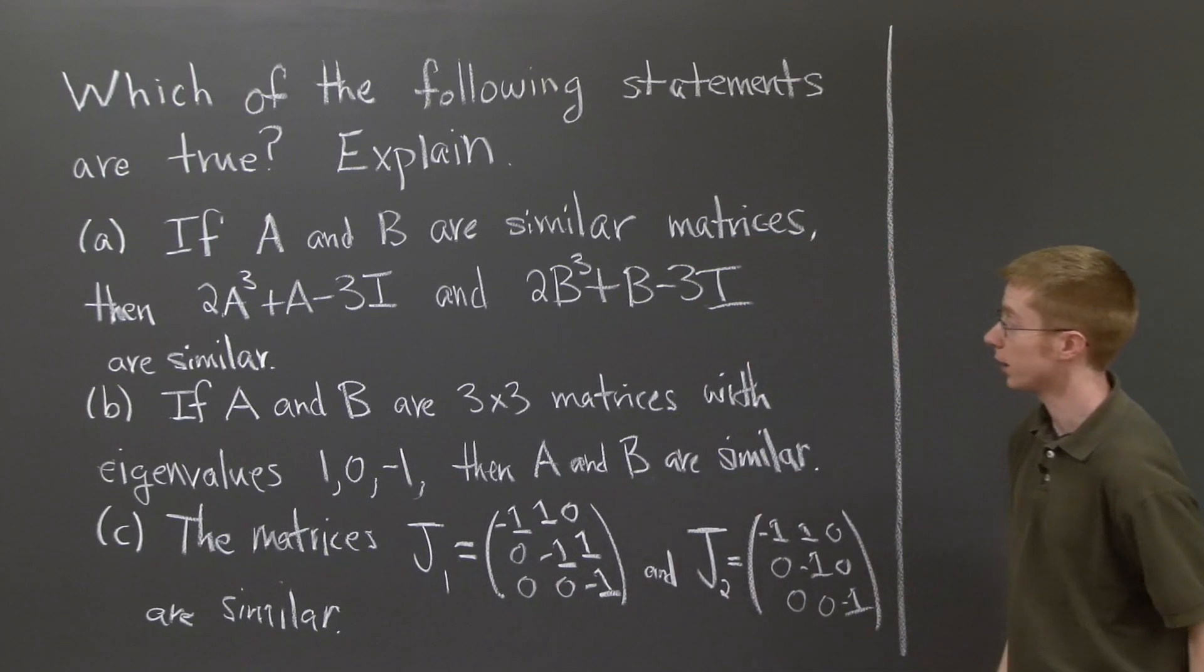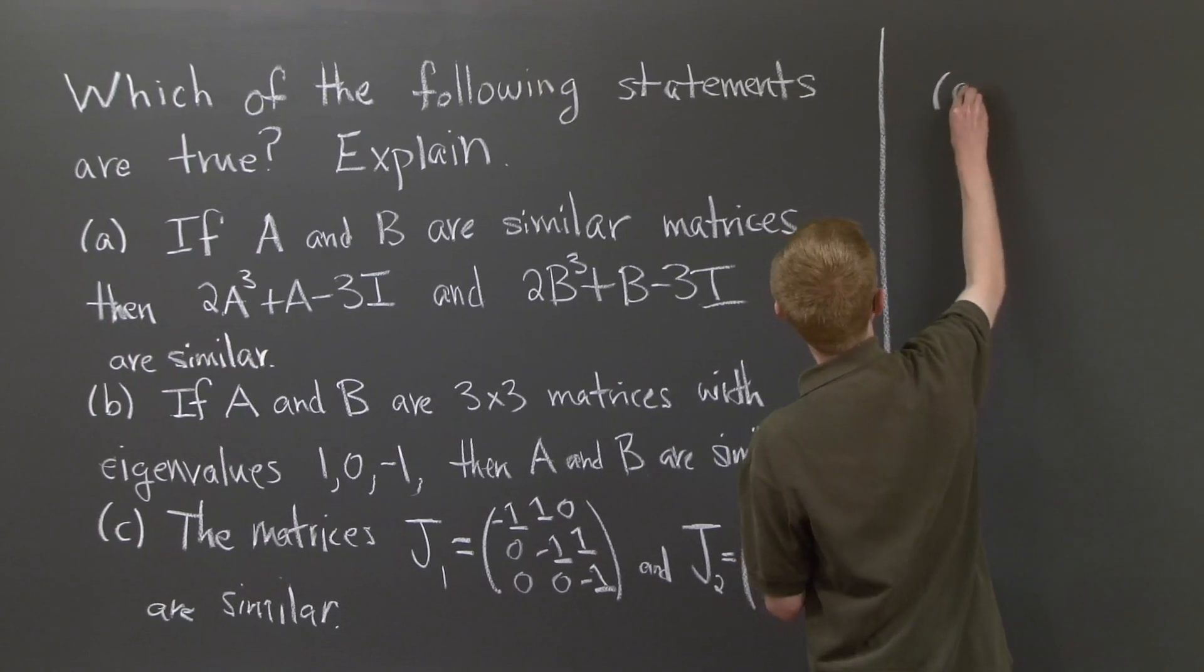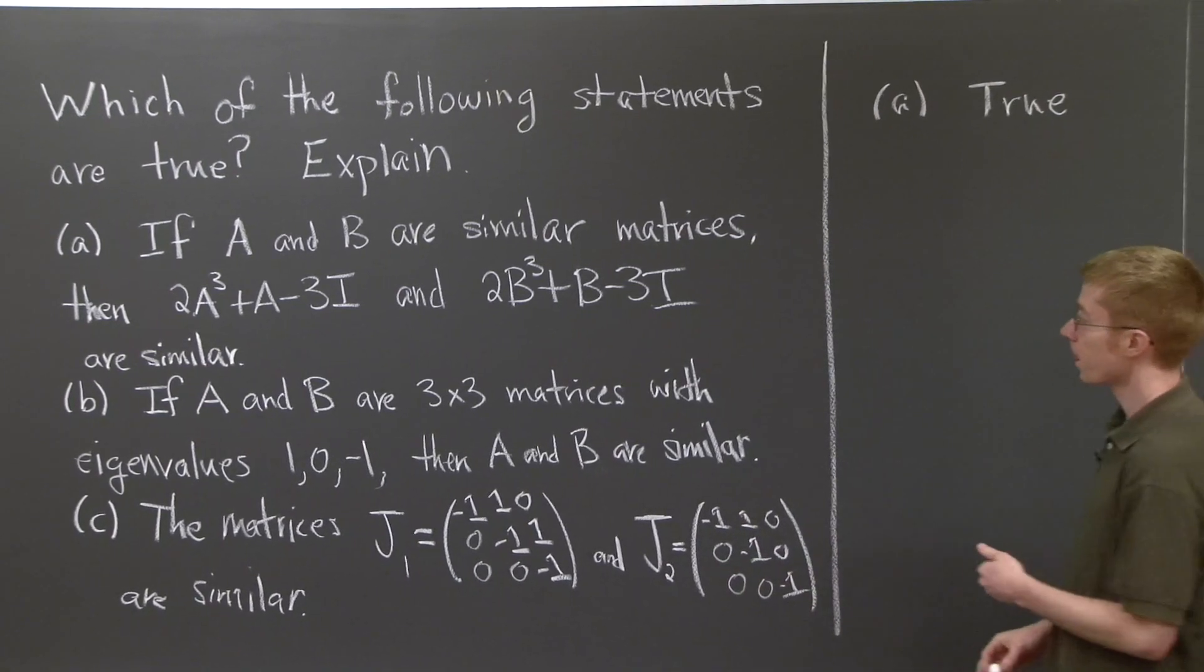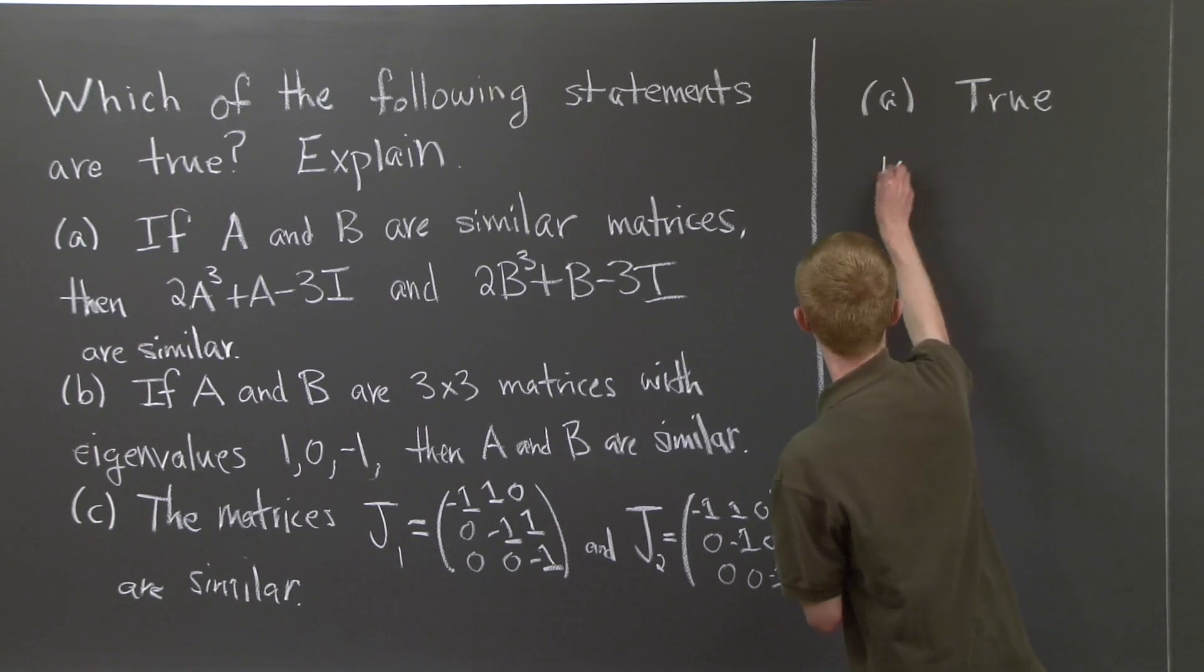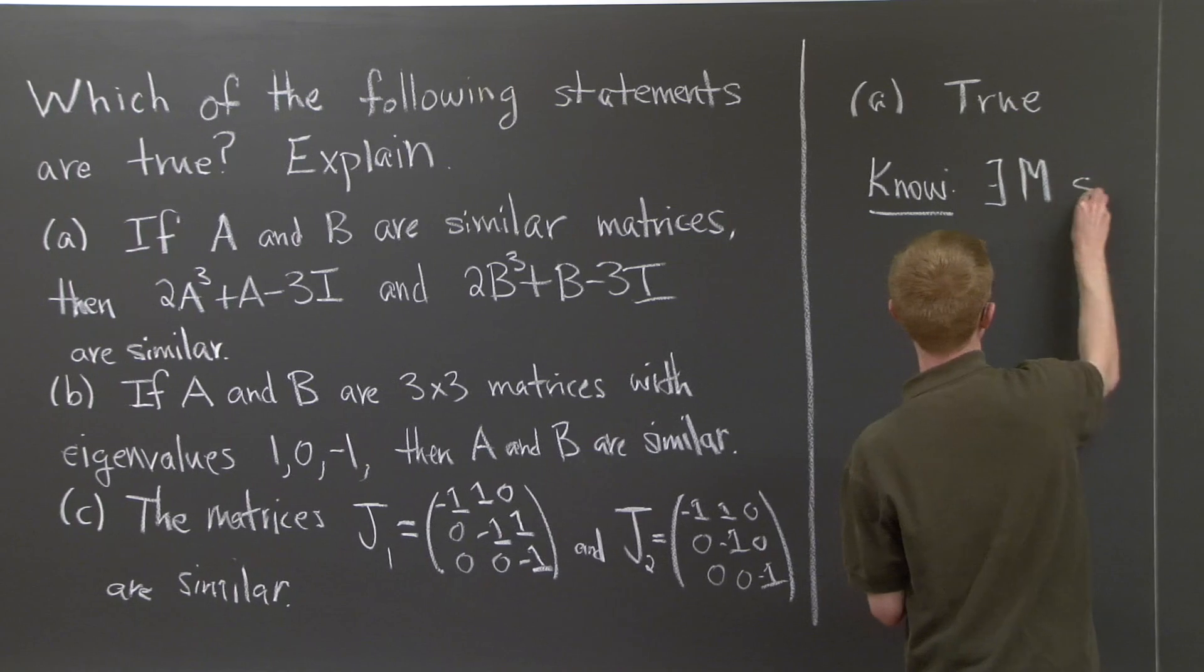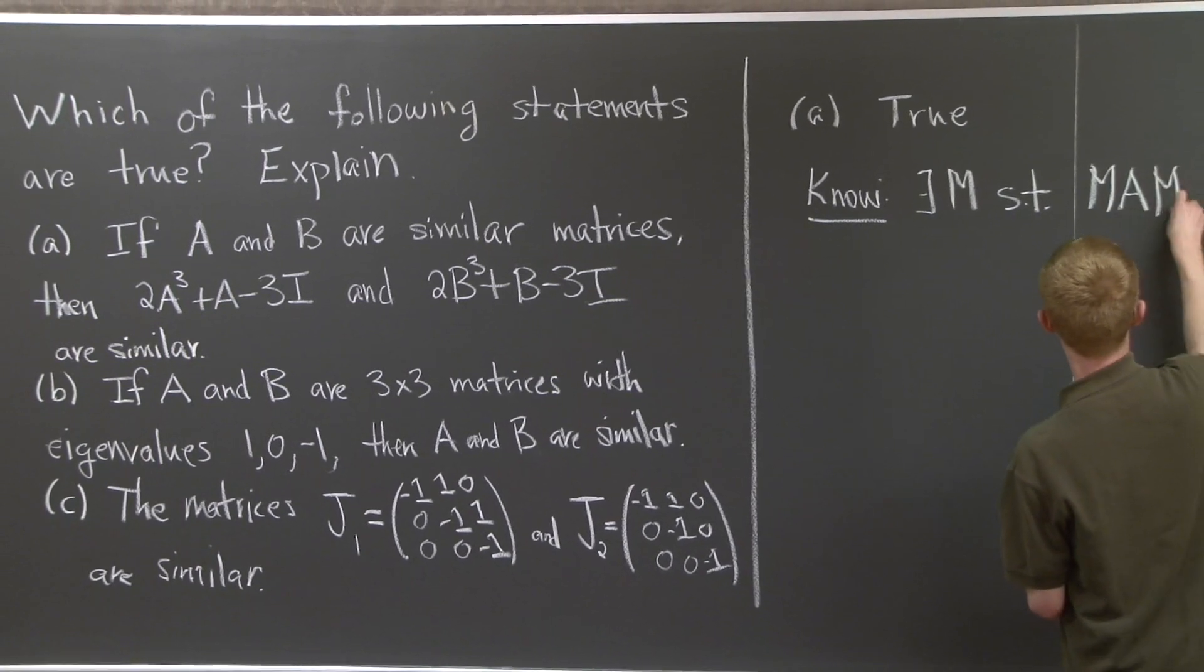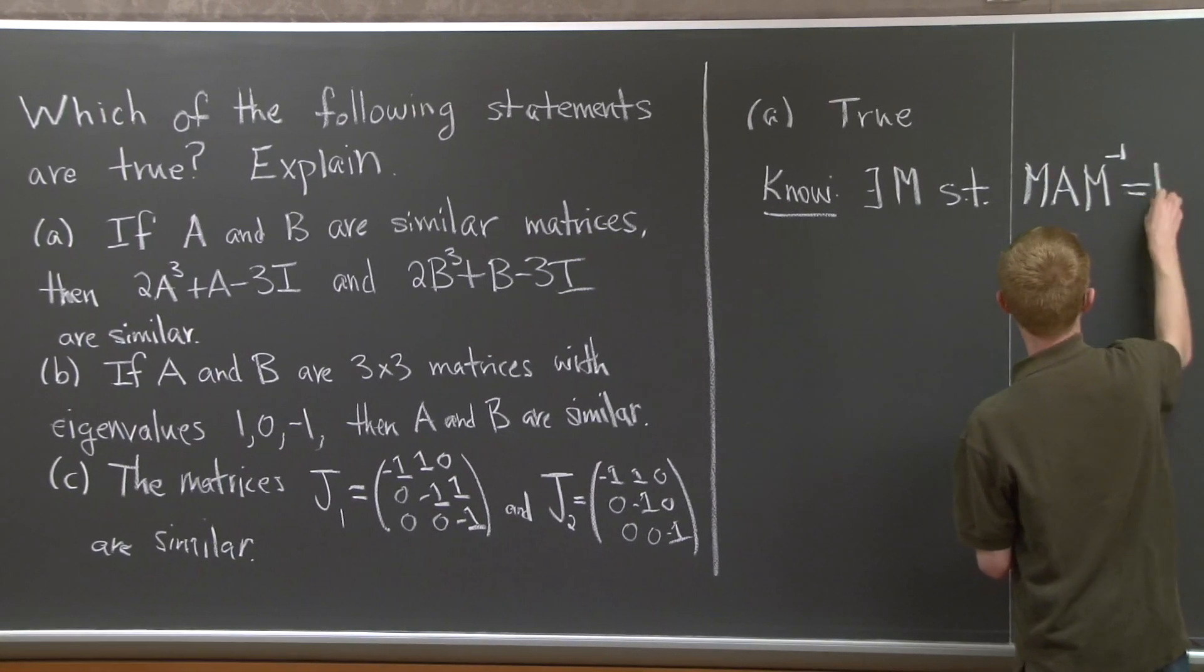Let's start with part A. Part A is true. Why? Well, what does it mean for A and B to be similar? We know there's some matrix M such that when I multiply A on the left by M and the right by M inverse, I get B.